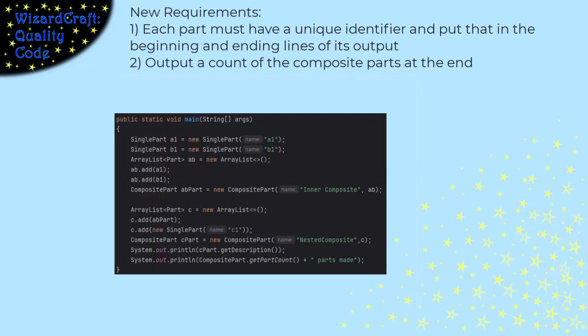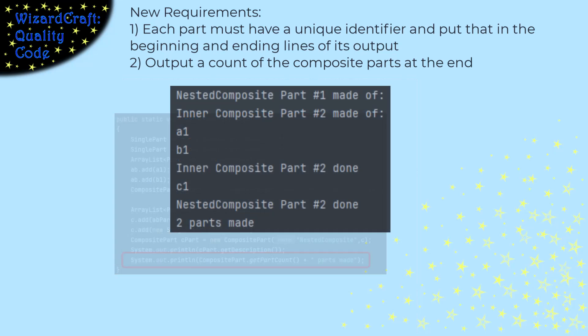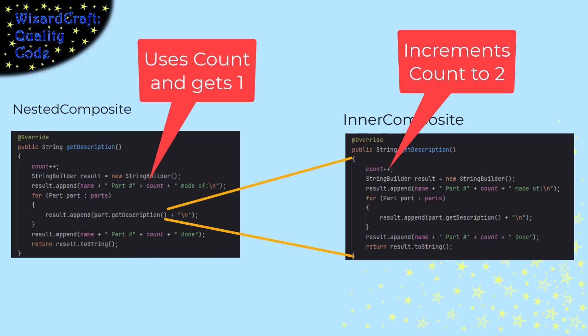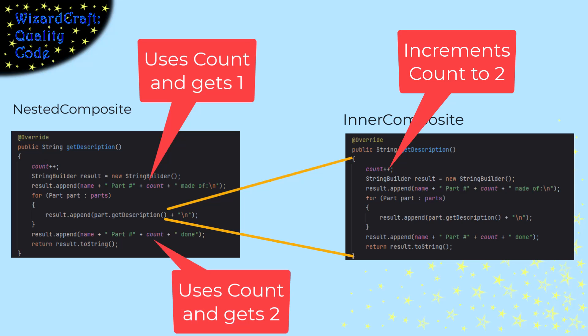Change our main to output the count and we should be good, right? Here's the output from the composite part we built before. It does add identifiers to the descriptions and the count looks right. However, look right here — the ending tag of the nested composite says it is part number 2 when it started as part number 1. That is not good. This version of getDescription is not re-entrant. The data they share is that count variable. Because the inner call on getDescription increments it between the two places that the outer call uses it, the identifiers the outer call puts at the beginning and ending of its description don't match.